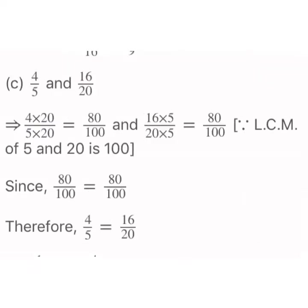Next is 4 upon 5 and 16 upon 20. We find the LCM of 5 and 20 to make the denominators the same, which is 100. So we multiply the fraction 4 upon 5 — both numerator 4 and denominator 5 — by 20, and we get 80 upon 100.